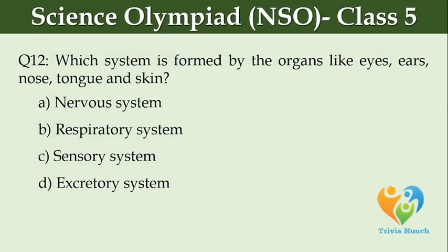Which system is formed by the organs like eyes, ears, nose, tongue, and skin? Option A, nervous system. Option B, respiratory system. Option C, sensory system. Option D, excretory system.